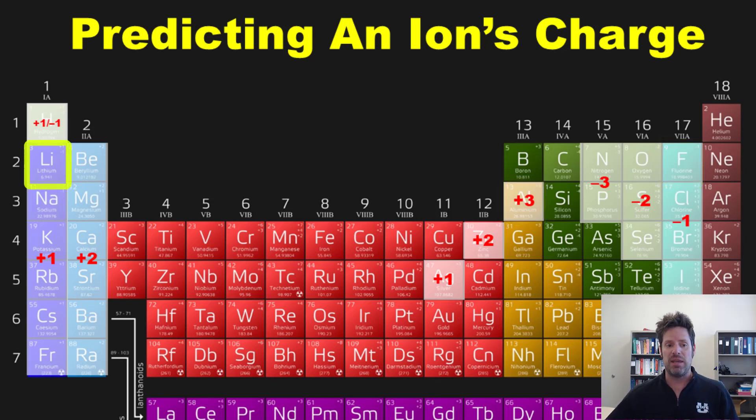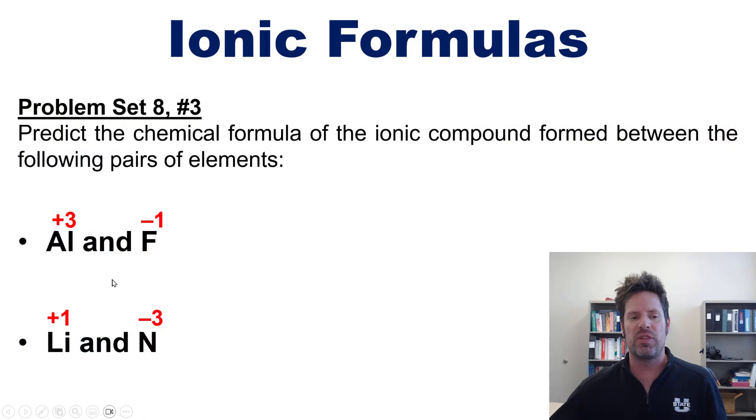By the same process, lithium, being in column one of the periodic table, will have a +1 charge, and nitrogen, being all the way over there in column 5A, will want to have a -3 charge in order to shift three boxes to the right to feel like the nearest noble gas.